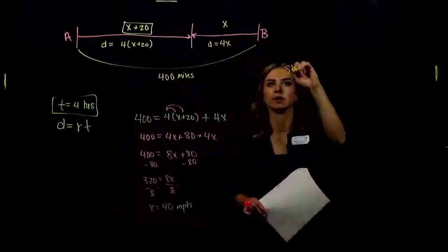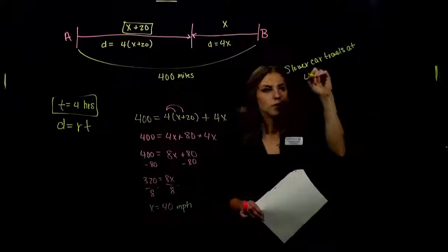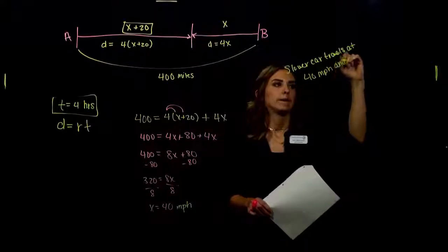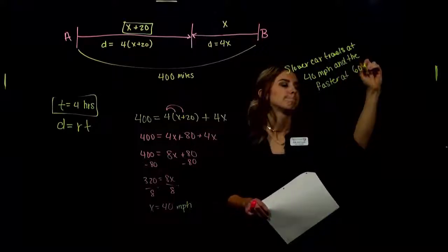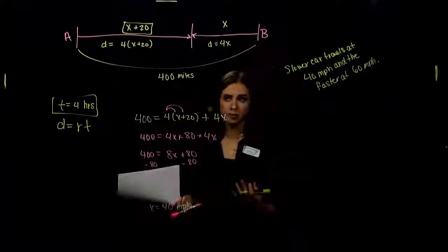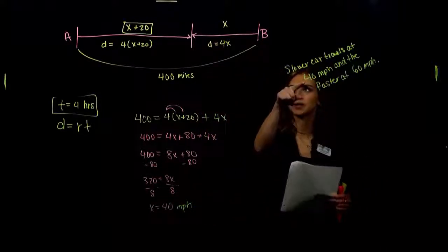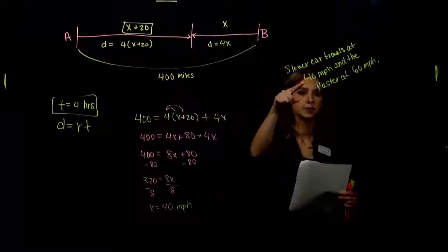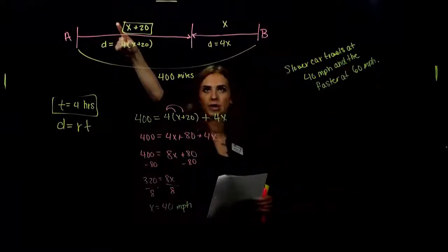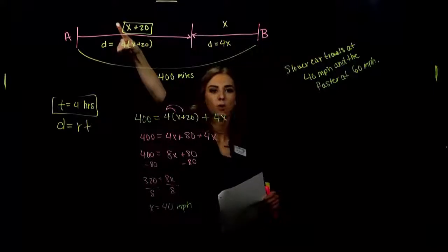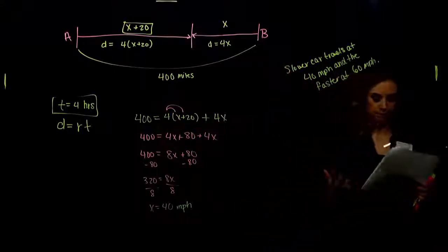So the slower car travels at 40 miles per hour. And the faster at 60. And this one will be super simple to check. Because again, what's happening? First one is going 40 miles per hour and he's traveling for 4 hours. 4 times 40. What are we adding on to that? How fast is our other driver driving? 60 miles per hour times 4. Add them together, what do we get? Distance of 400 miles. We always have a check in this class.